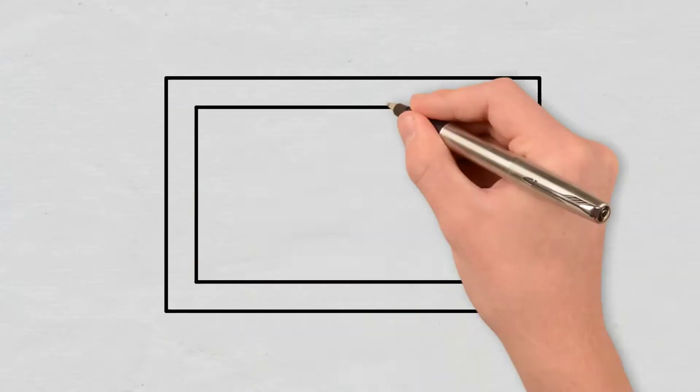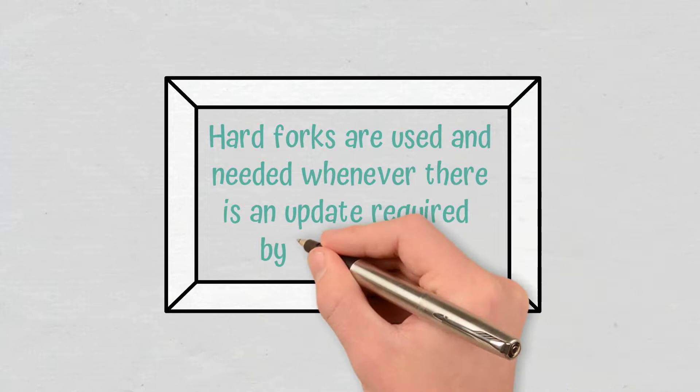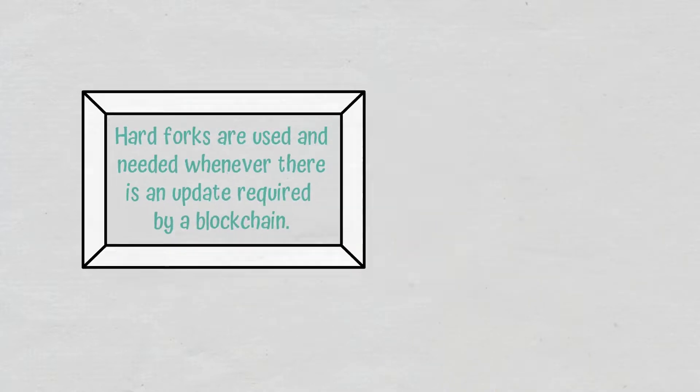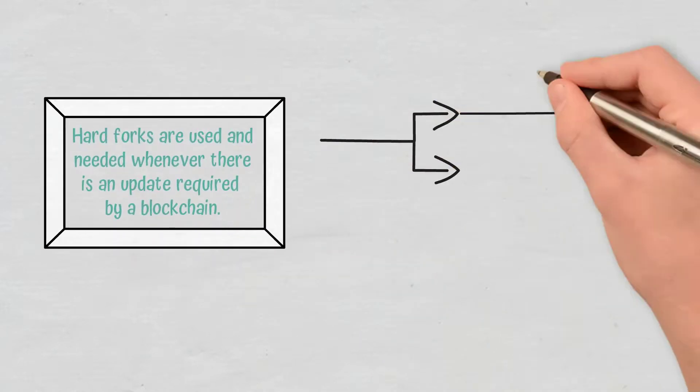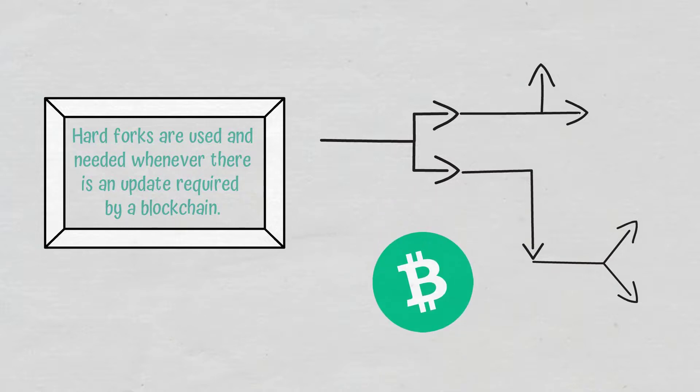Conclusions: Hard forks are used and needed whenever there is an update required by a blockchain. Throughout its history, there have been several Bitcoin hard forks which have led to the creation of Bitcoin-related currencies like Bitcoin Cash.